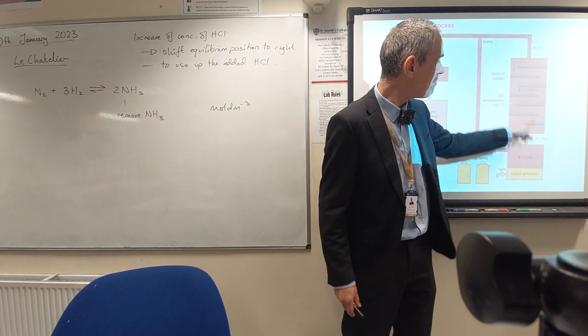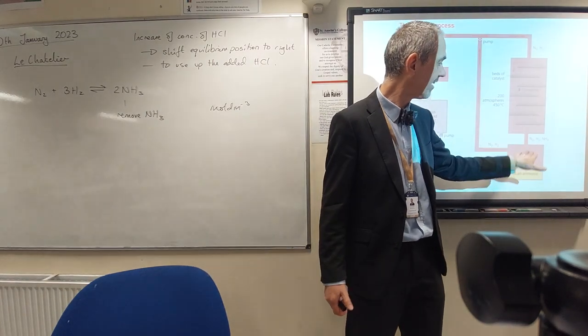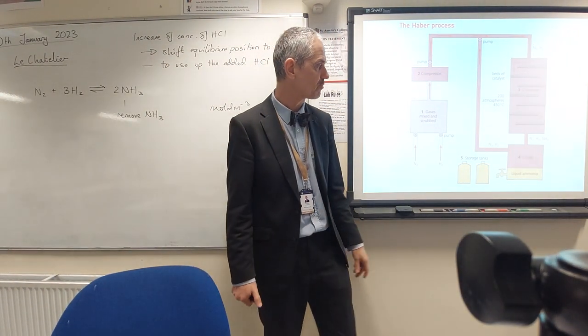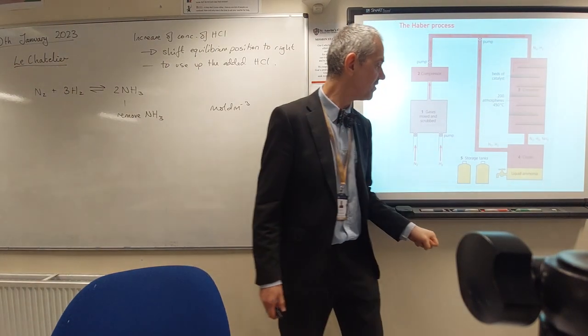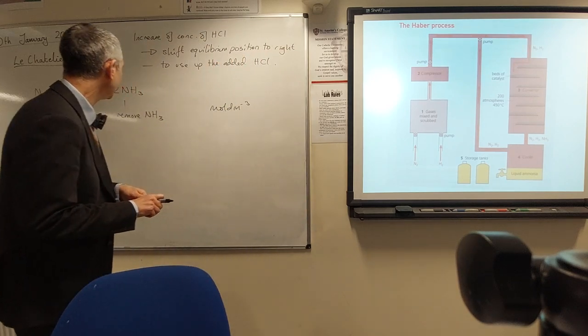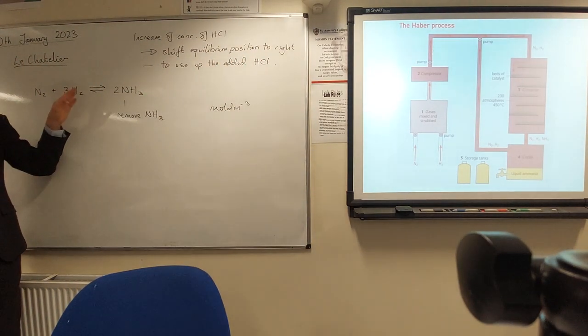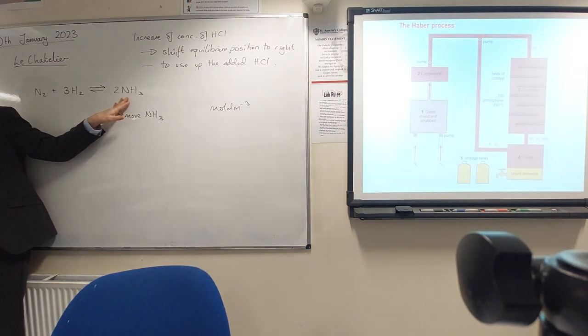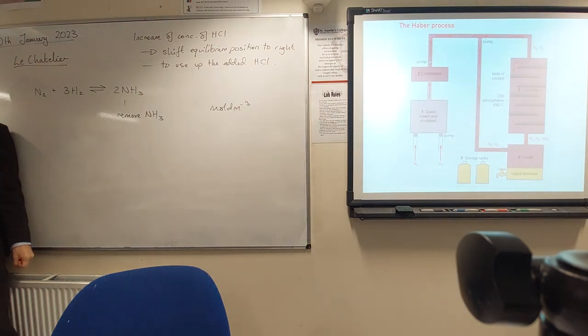Then we take a mixture of all three gases out of that container and we cool it down and compress it a bit more as well. And what happens there is ammonia turns into a liquid. You might just want to think about why that is. Why of these three compounds would ammonia turn into a liquid first if I start to cool all three of them down?